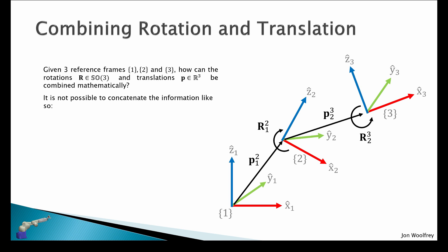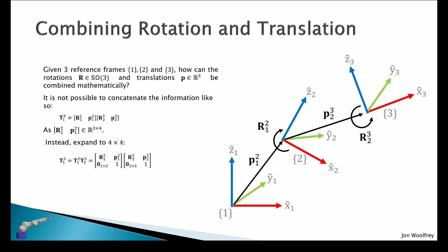It's not possible to concatenate the information like so. We can't just multiply rotation and translation by putting them together. This is because when we combine rotation and translation like this, we have a three by four matrix, and what we need is to expand it to a four by four matrix. So the transform from one to three is the transform from one to two multiplied by two to three. In each of these transforms I have the rotation component, translation component, and zero, zero, zero, one on the bottom row. So this is a four by four matrix and we can multiply this through. We'll have R1 to two by R2 to three, and a rotation by this translation plus this translation, and this gives us our transformation matrix from one to three.